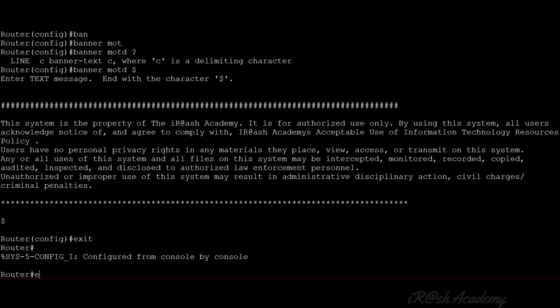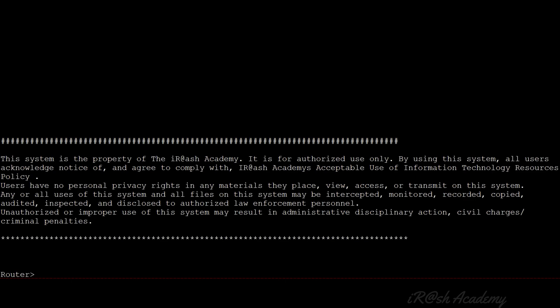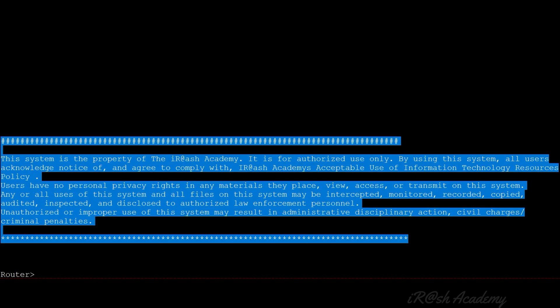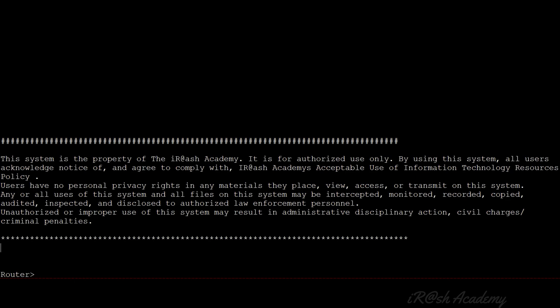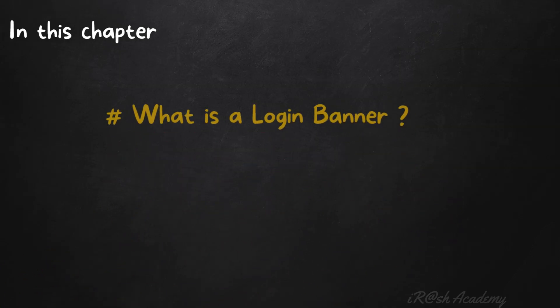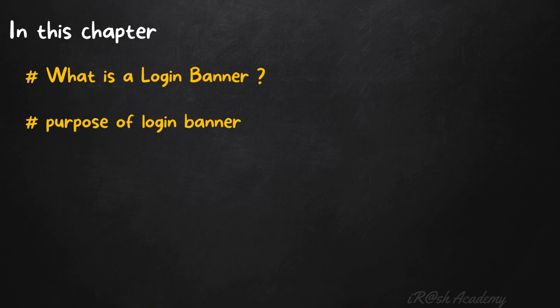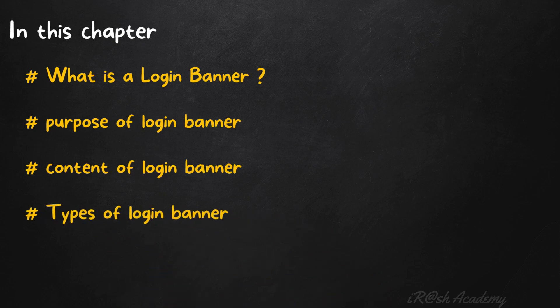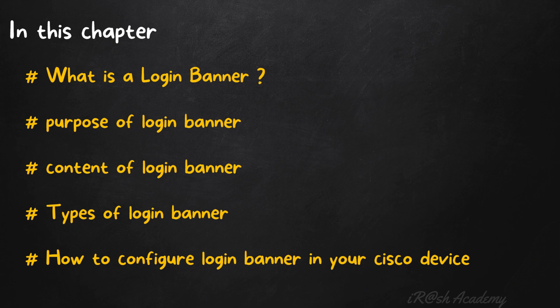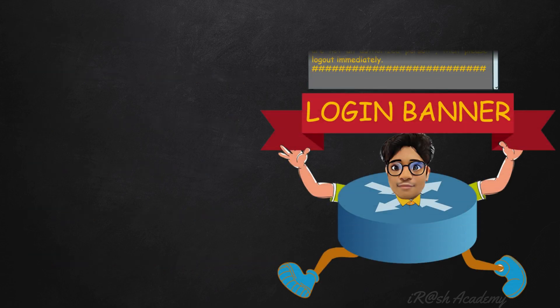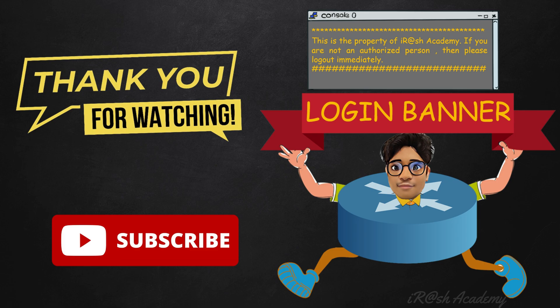The configuration is now completed. To test it, exit from privilege mode and user mode, return to the initial state, and press Enter. My customized message appears. You can set up any login banner message in your Cisco devices — whether it is a switch, router, wireless LAN controller, or firewall — if the device is running Cisco IOS, you can use the same command. In this chapter we covered what a login banner is, its purpose, contents, different types, and how to configure it in Cisco devices.